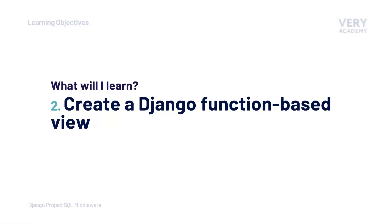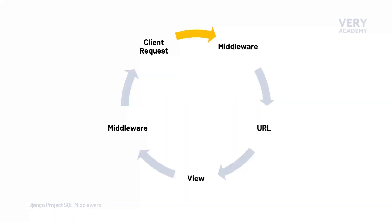Once we have described the Django request-response cycle, that will give you a much better understanding of what a Django view and Django URL is, and why it's important to fulfill the request-response cycle. So this is a very cut-down version, but let's imagine we have a client — a browser, a user — who is accessing our Django service.